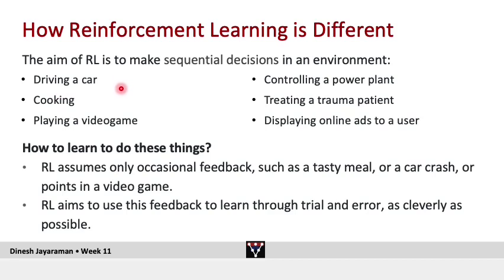We make sequential decisions all the time. You might be cooking, playing a video game, controlling a power plant, changing settings in a power plant, coming up with a medical treatment plan for a patient, or just trying to display online ads to a user. All of this typically involves some kind of sequential decision making. The question then becomes: how do we learn to make those sequential decisions?